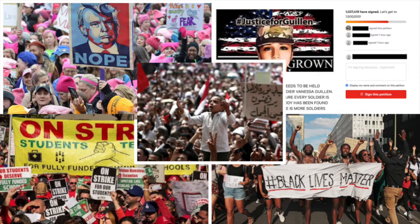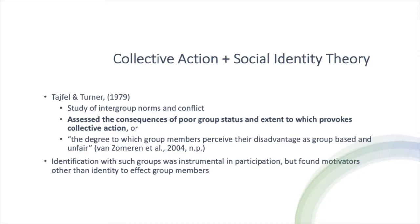Collective action is the response by a group and their allies to inequitable and often oppressive experiences, in which joining as one to demand change is seen as the most viable mechanism for course of action. Much of the existing research on how we see collective action operating today is situated in the social identity theory. According to Zomarin et al., the degree to which group members perceive their disadvantage as group-based and unfair predicts the likelihood of collective action. While identification with a group typically always represents participants in collective action, scholars have found that the extent to which groups face injustice and several other factors affect mobilization.